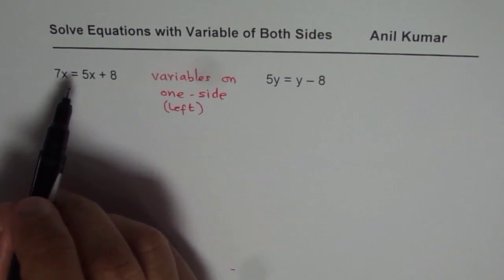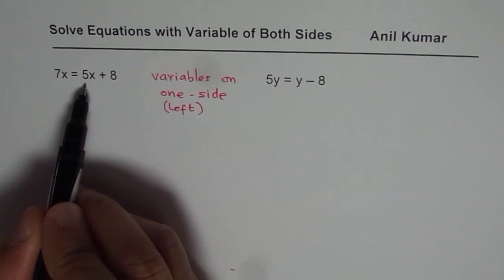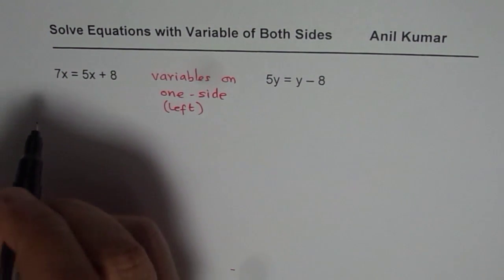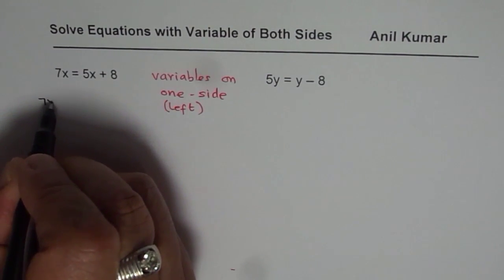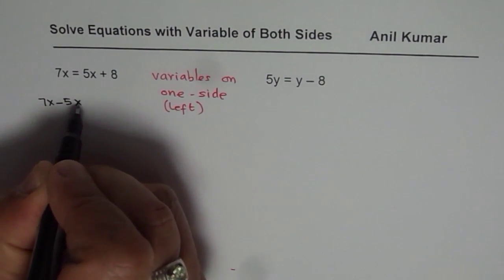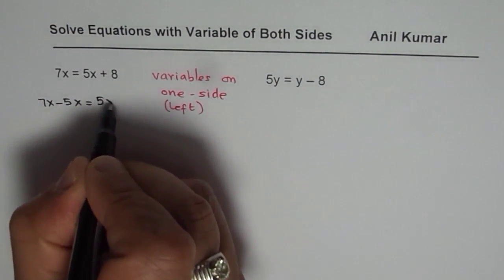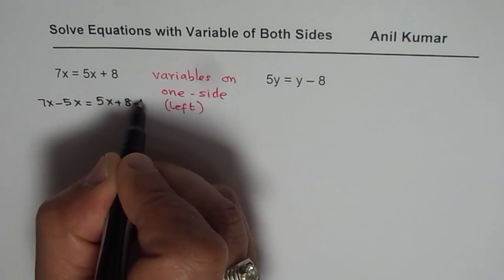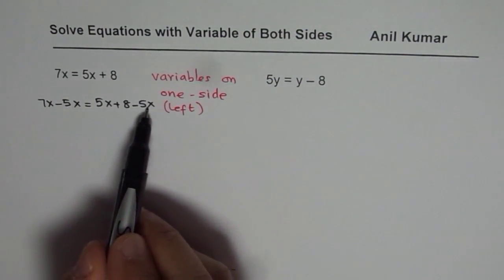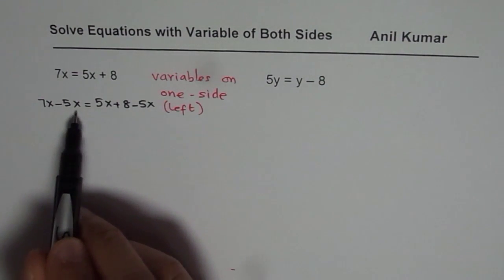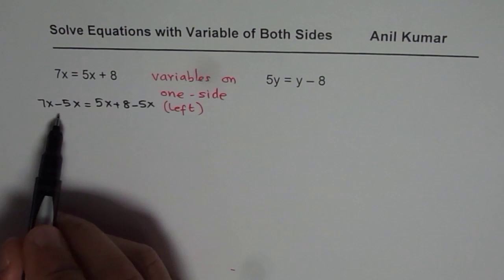So first step will be to subtract 5x from both sides. So we will write this as 7x minus 5x equals 5x plus 8 minus 5x. If I take away 5x from both sides, equality is maintained and we get variables on left side.